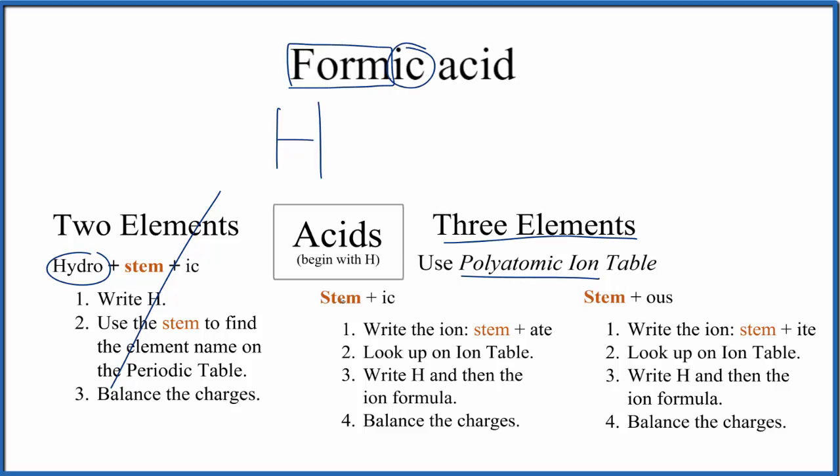When we look at this we see we have the stem, that's that F-O-R-M, and then ic on the end. So the stem plus ic, these rules right here we can use those to write the formula for formic acid.